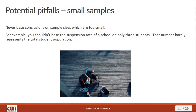Another pitfall people commonly fall into is the use of small samples. You never want to base your conclusions on sample sizes that are too small. For example, if you're studying the suspension rate of a school, you want a sample size bigger than three students — there's no way a sample of three students will have characteristics representative enough of the entire school population. If you want to make conclusions about a population based on a sample, you've got to make sure you take a sufficiently large sample size.